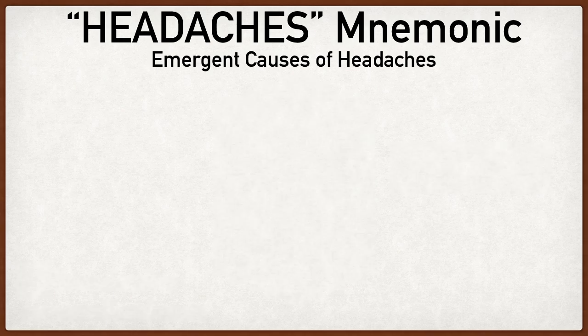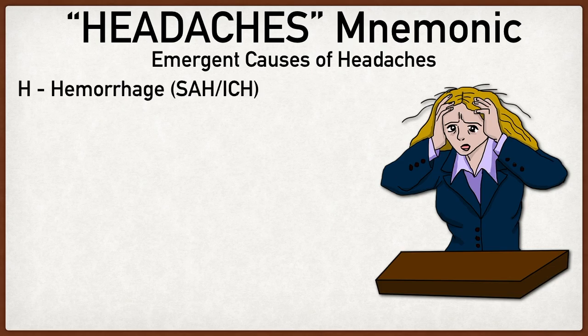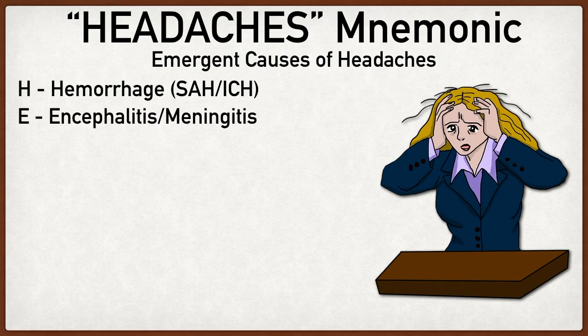The mnemonic to remember here is HEADACHES, which is simple and easy to remember. H stands for hemorrhage — this will help you remember things like subarachnoid hemorrhage and intracerebral hemorrhage. E stands for encephalitis and meningitis, going along that infectious route. A stands for abscess — this will help you remember things like brain abscess or retropharyngeal abscess.